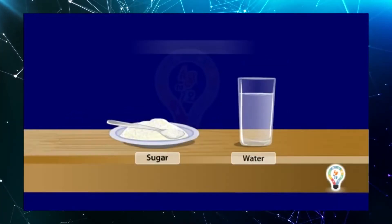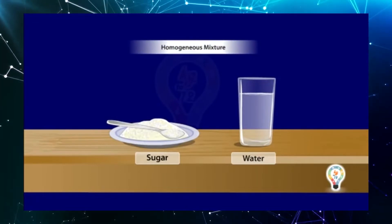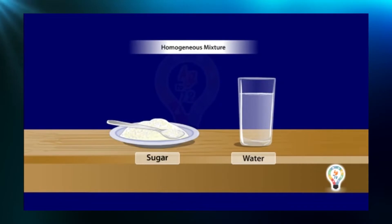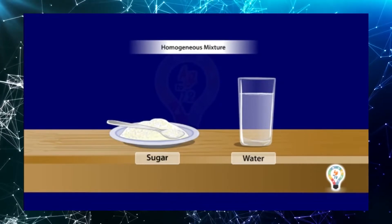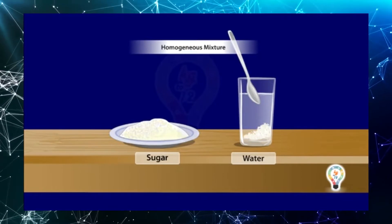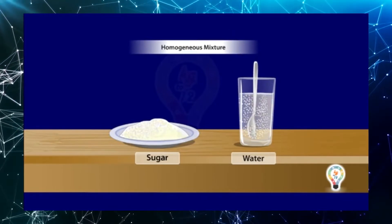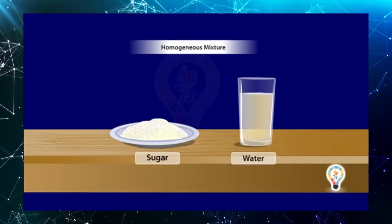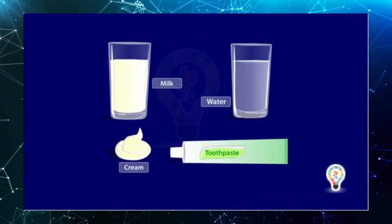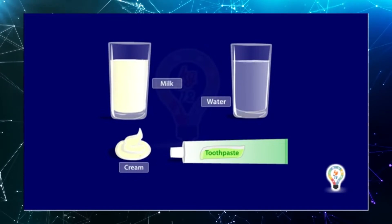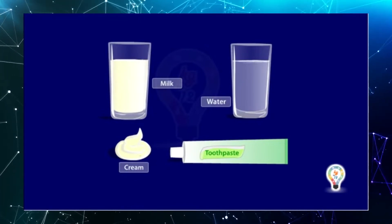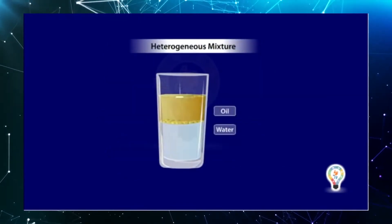Different types of mixtures. There are two types of mixtures. The first is a homogeneous mixture — a mixture whose components are soluble in each other. For example, when sugar is added to water, it dissolves showing no signs of two different substances. Other such examples are a mixture of milk, which contains water and cream, and a mixture of toothpaste.